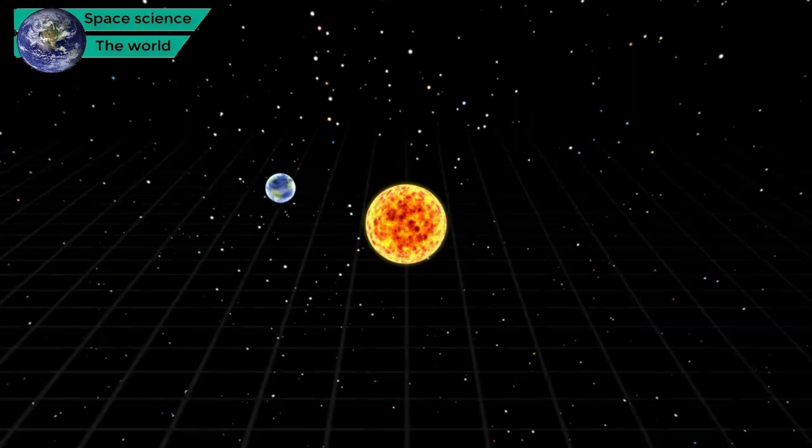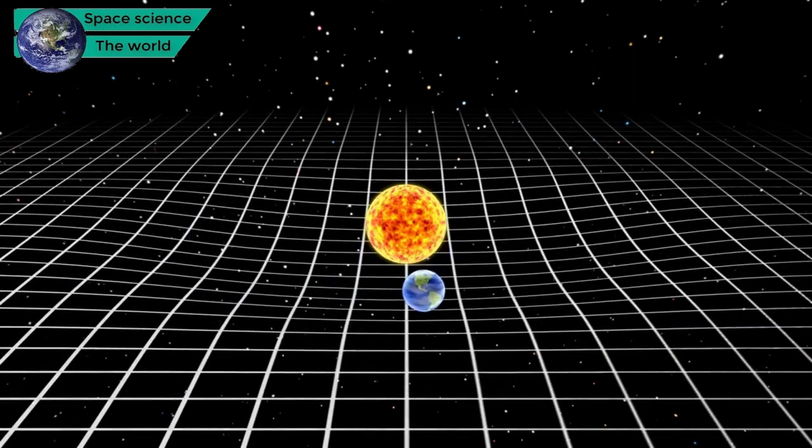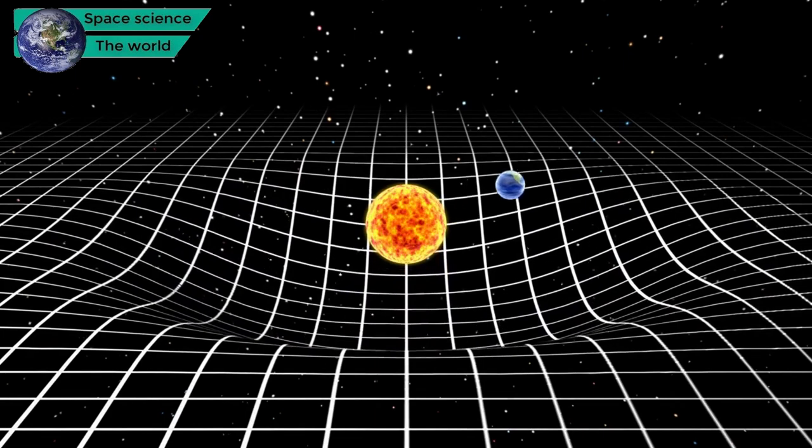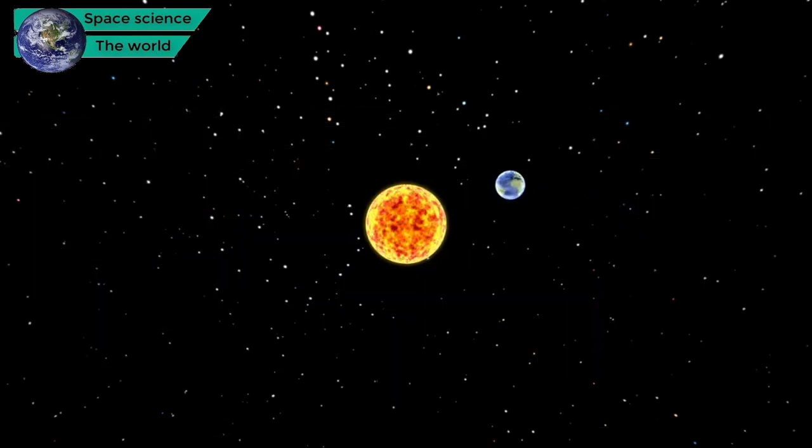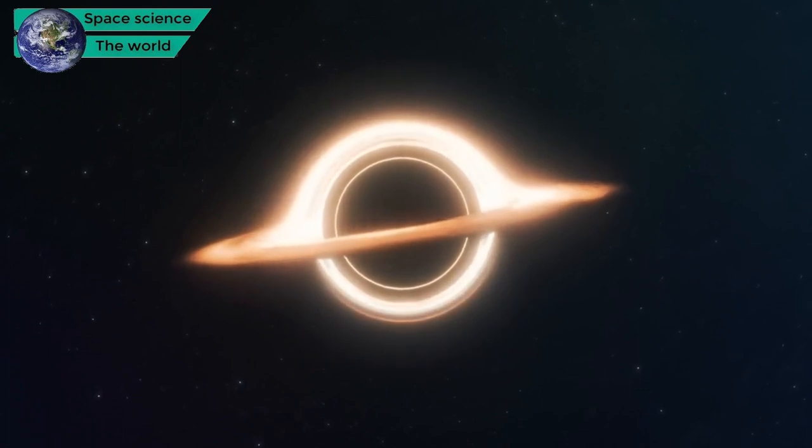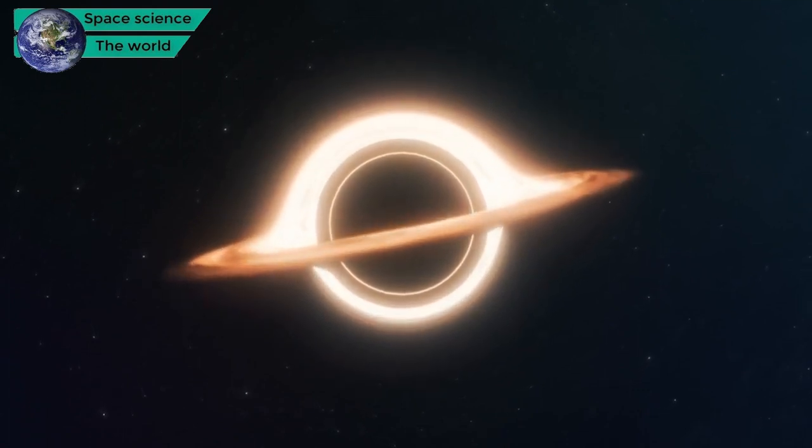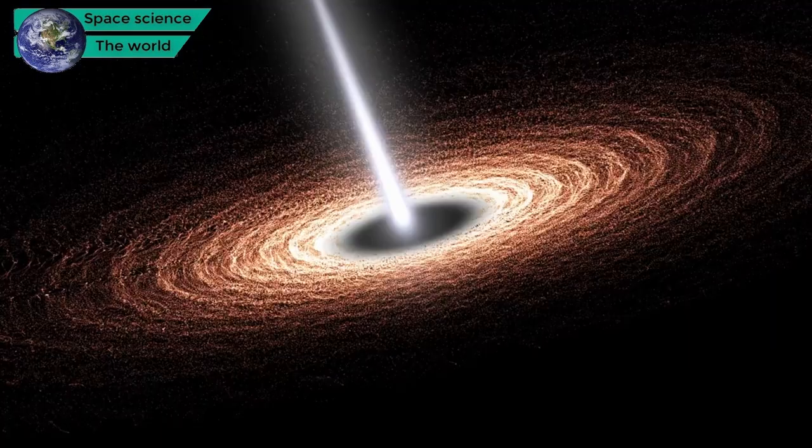If the remnant core surpasses roughly three solar masses, gravity's dominance compels it to collapse into an infinitesimal singularity, constituting the core of a black hole. This resulting black hole wields an irresistibly potent gravitational pull, so intense that not even light can escape.